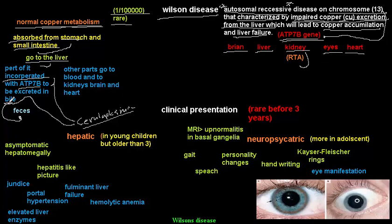The second pathway: copper incorporates with other proteins and is excreted into the blood, reaching the kidney, brain, heart, and other organs. In Wilson disease, there is a defect in chromosome 13 — specifically in the ATP7B gene — which is the gene responsible for incorporating copper in the liver for excretion into bile.